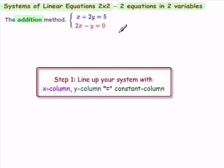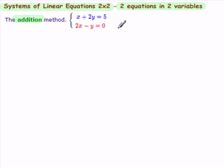Now, the first step in using the addition method is to line up your system. You need to have your first variable, let's say x in one column, then your second variable, y in the second column. You need equal sign and the constants. The addition method works well when you've got everything lined up.